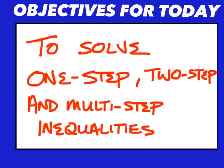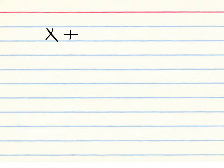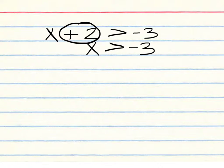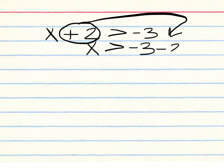To solve one-step, two-step, and multi-step inequalities — for example, x plus 2 greater than negative 3 — you solve it just like an equation. Get the x by itself on the left, keep what you have on the right, and move what's with the x by addition or subtraction to the right. Instead of plus 2, it becomes minus 2, so x is greater than negative 5.